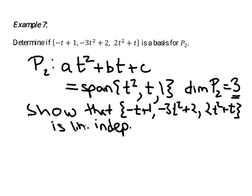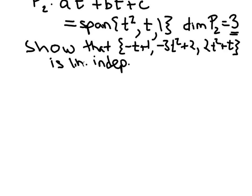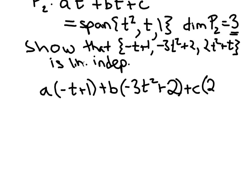So linearly independent. To do that, we need to show that the equation where we set this up: some scalar times the first vector, negative t plus 1, plus some scalar times the second vector, negative 3t squared plus 2, plus some scalar times the third vector, 2t squared plus t, is equal to 0. Those vectors are linearly independent if the only way this is true is for a, b, and c to only be 0. That's what we need to prove.